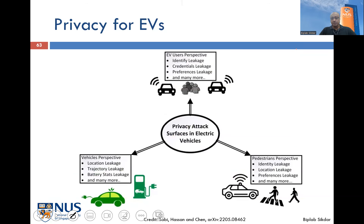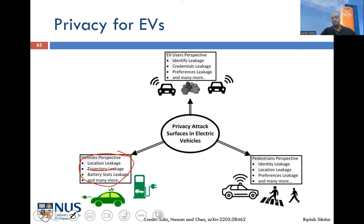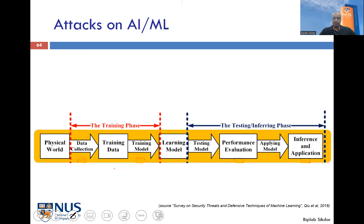Regarding electric vehicles: one problem is that you have to charge them frequently, and if you charge them at a charging station rather than at home, the charging station knows where you are. This causes location leakage. If someone knows exactly where you frequently charge your vehicle, they know what kind of trajectory you follow. How do you ensure users can charge their vehicles at random locations while still protecting their privacy? That is an open area of research.